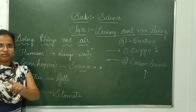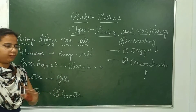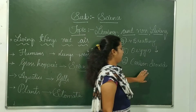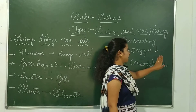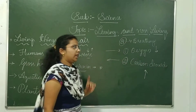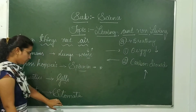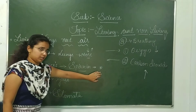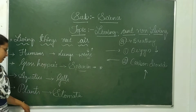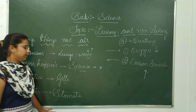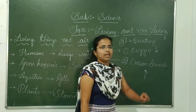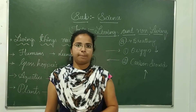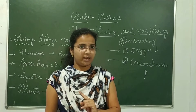Plants also breathe. They take in carbon dioxide and give out oxygen with the help of tiny pores like grasshoppers have. In grasshoppers those pores are spiracles; in plants, they are present in the leaves. They are called stomata — tiny pores which help plants for breathing.